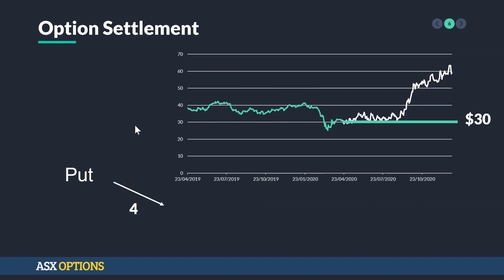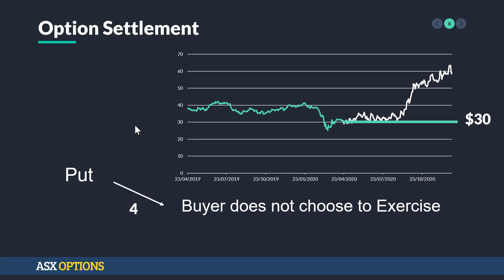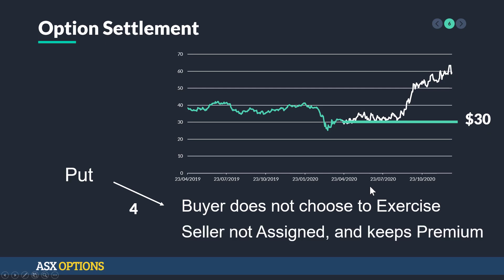The last scenario is that the put buyer does not choose to exercise, because we have a strike price of $30 but the price has gone above. So why would you sell at $30 when you can go into the market and sell at $60? The seller is not assigned and keeps the option premium.